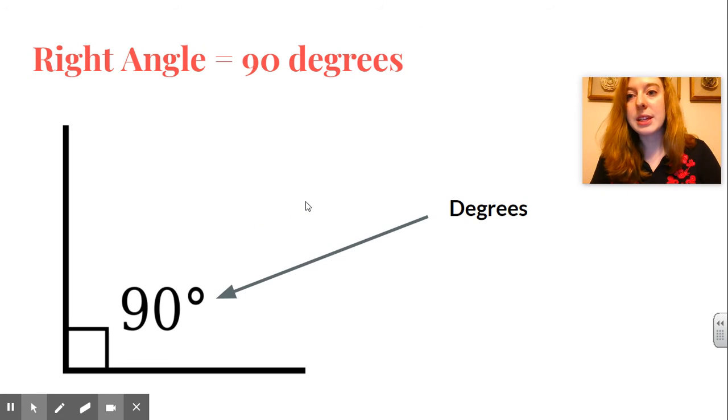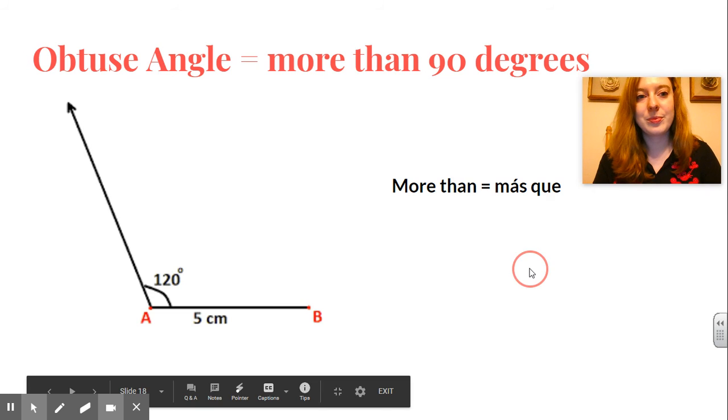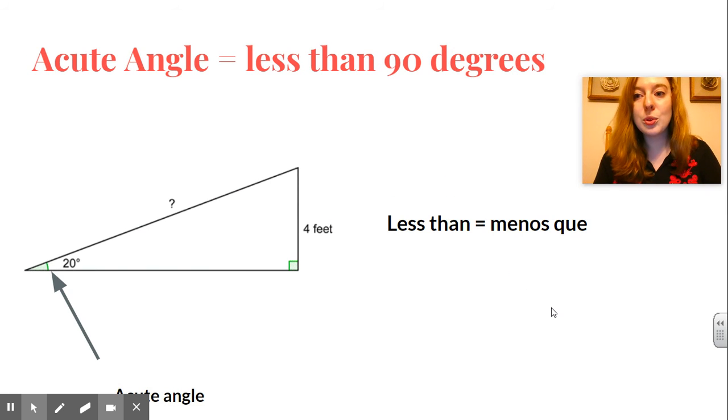A right angle is 90 degrees. This little circle here is called degrees in English. An obtuse, obtuse, obtuse angle is more than 90 degrees. So more than, if you're a Spanish speaker, is más que. So 120 degrees is obtuse. An acute angle is less than 90 degrees. So if you're a Spanish speaker, less than is menos que. So 20 degrees is an acute angle.